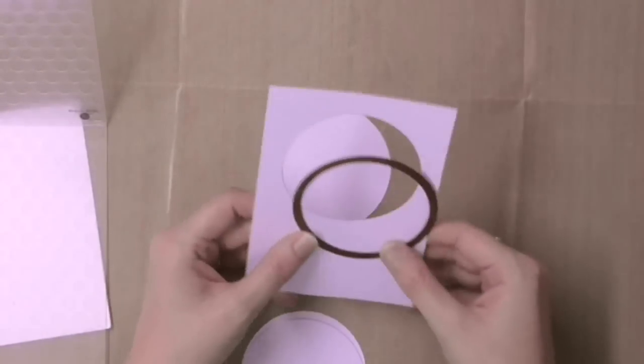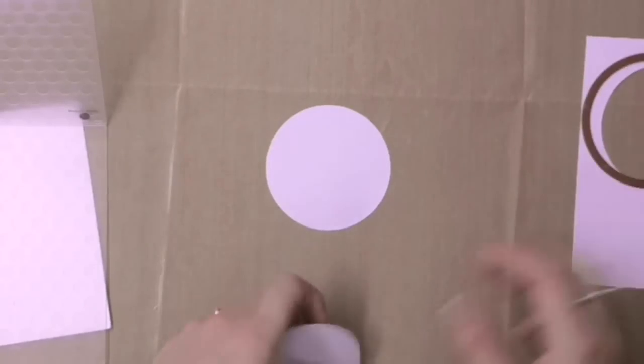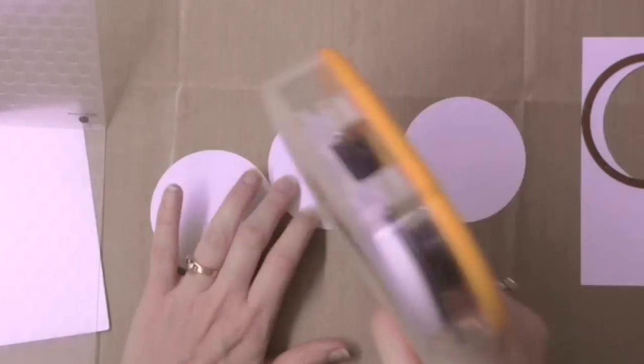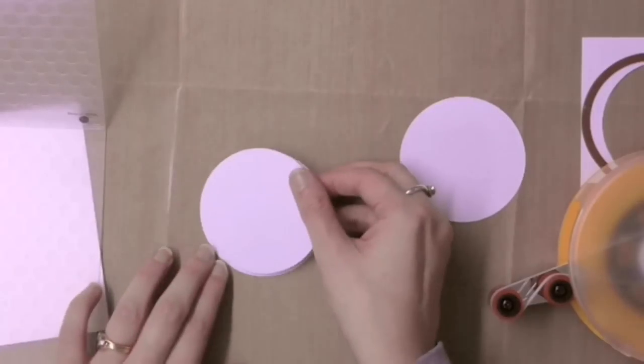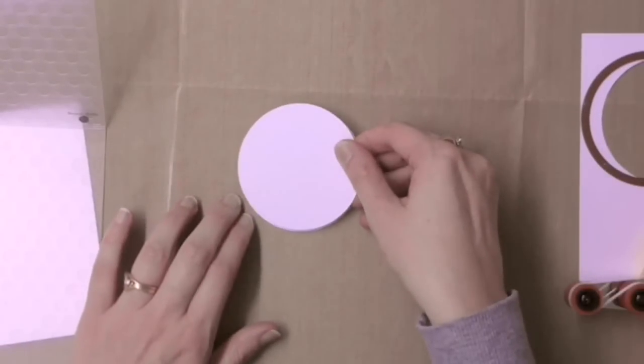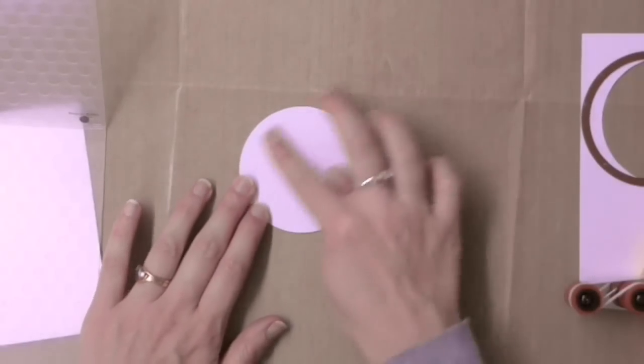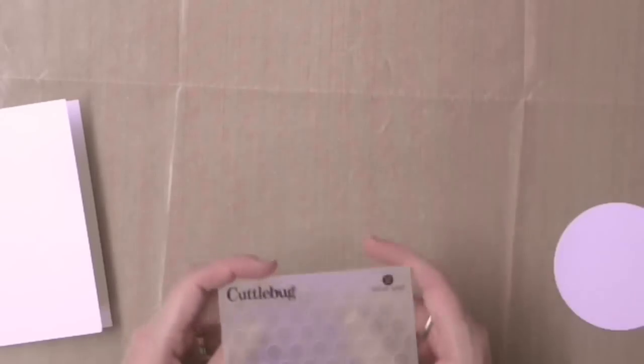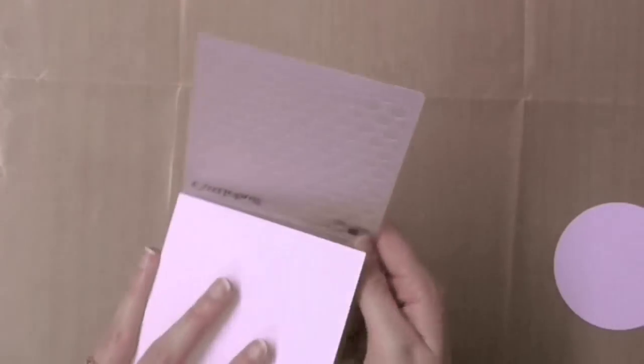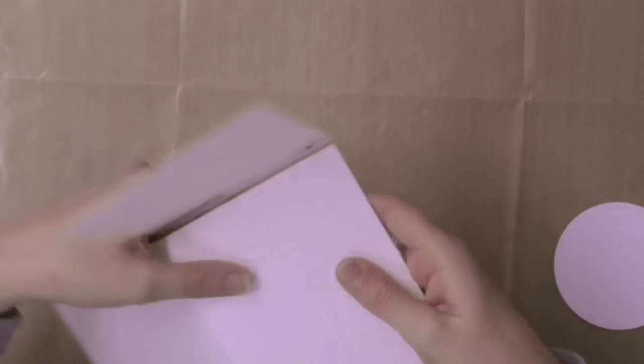So to do this I'm creating a circular shim. I've run my Spellbinders Nest Abilities Circle die through my cuddle bug with some light cardstock and I'm going to stick a couple of these together. That will create a more sturdy circle that will be the shim to help me emboss only in the area that I want, which will leave an embossed circle.